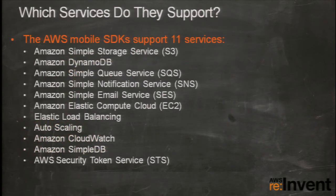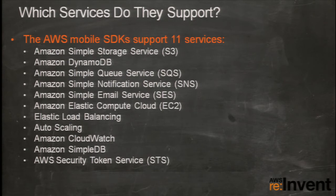We support 11 services within the mobile SDKs, including big data services like S3 and DynamoDB, as well as control-plane type services like EC2 and Elastic Load Balancing — a wide spectrum giving you variety for different apps you can build. As services evolve, add new APIs and features, we update the SDKs correspondingly. So when S3 introduces a new feature, the SDKs are updated to give you access to those new features.